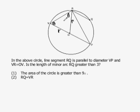They tell us that VR is equal to OV, which means we have an equilateral triangle. In other words, this angle here and this angle are all 60 degrees.